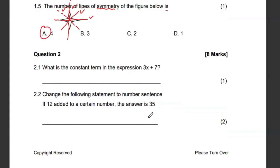Then 2.1, what is the constant term in the expression? Remember we said a constant is basically a number without a letter. So seven becomes the constant. And then change the following statement to a number sentence. If 12 is added to a certain number, the answer is 35. So if 12 is added is a plus, a certain number which we don't know. We use variables. You can use X, Y, P, K, any letter. The answer is 35. So that is the mathematical expression.